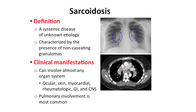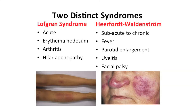Sarcoid can definitely present with uveitis. Sarcoidosis is a systemic disease affecting every organ in the body. It can affect the eyes with posterior or anterior uveitis, it can affect the heart, it can affect the skin giving you lesions like erythema nodosum, and it can affect the lung — in fact, 90% of people with sarcoid have lung involvement. For board exams, think about Lofgren's syndrome, which gives you the combination of erythema nodosum, arthritis, and hilar adenopathy, and the more rare subacute-to-chronic Heerfordt-Waldenström syndrome.